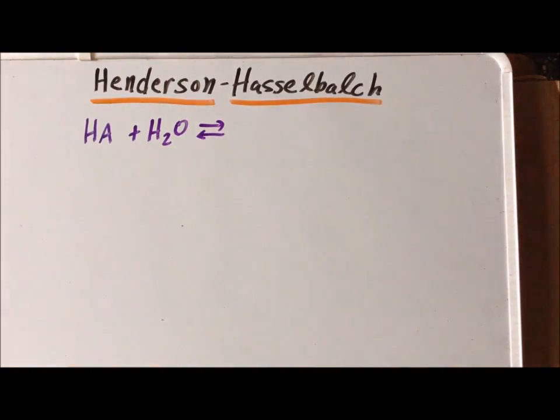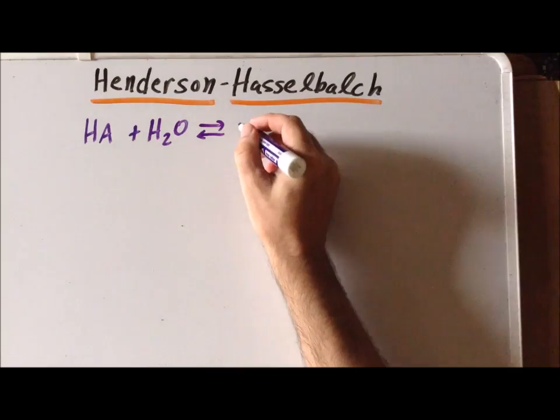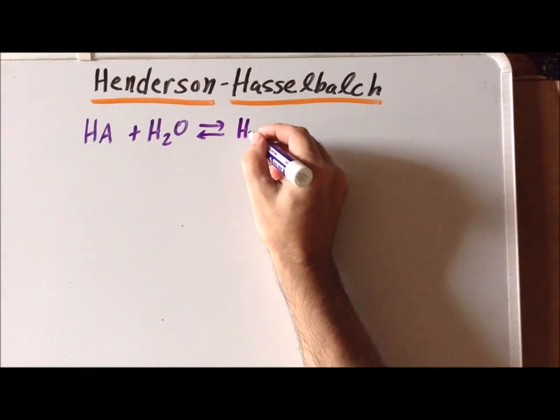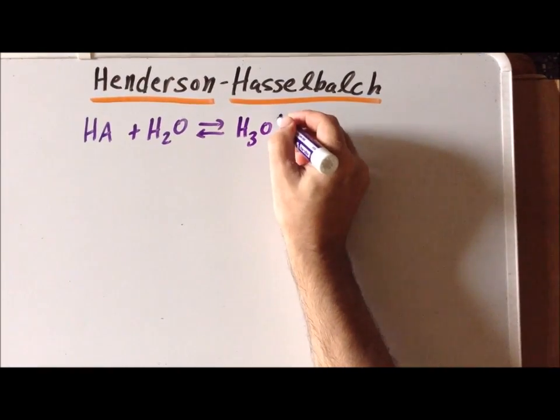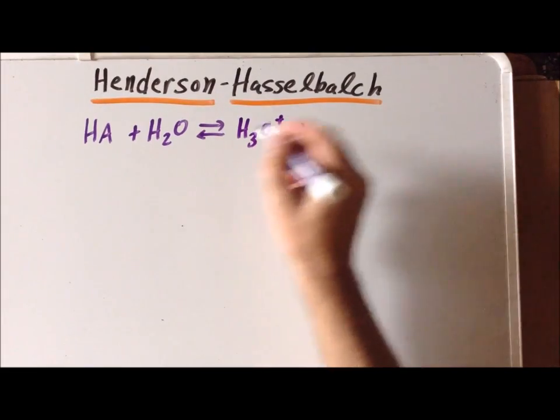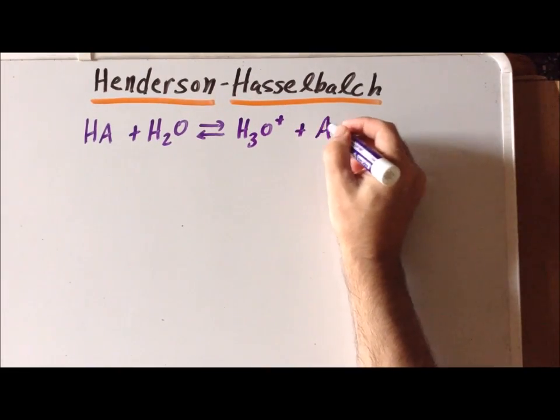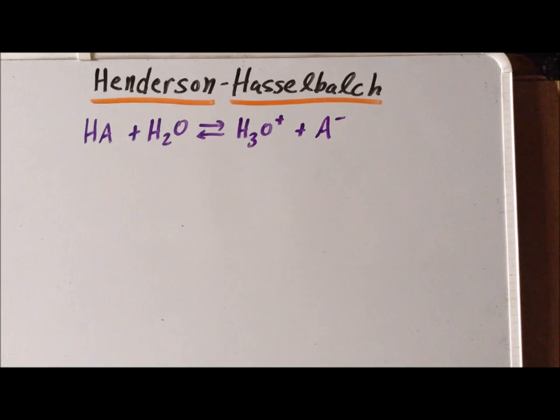The acid will donate a proton to water to form hydronium ion and will be left with the conjugate base of the acid, which is the anion A minus.